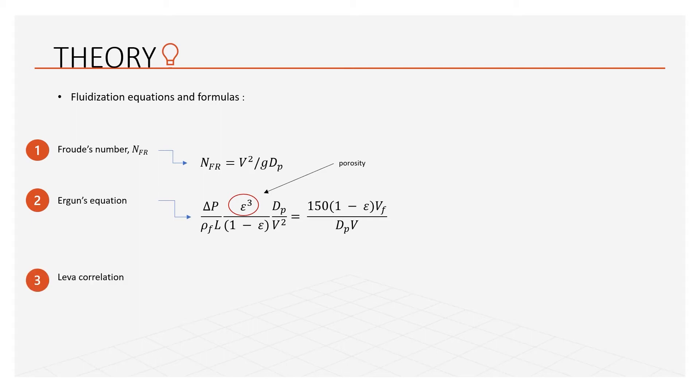The last one is the Lewa correlation. This correlation is used to find the minimum fluidizing velocity when gas is the fluidizing medium. When the gas velocity increases beyond the minimum fluidization velocity, bubbles can be formed. The point at which this occurs depends on the particle size and density. Smaller particles tend to experience smooth fluidization, while large particles tend to start bubbling at the point of minimum fluidization.